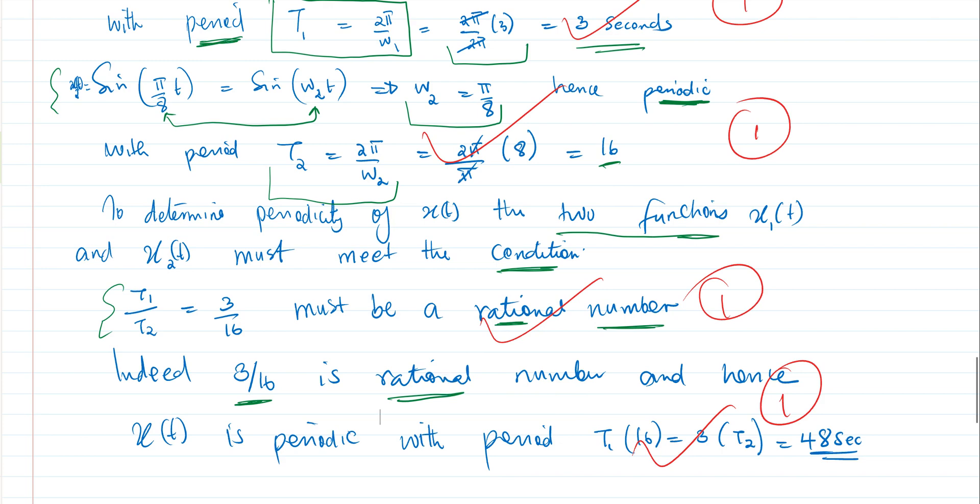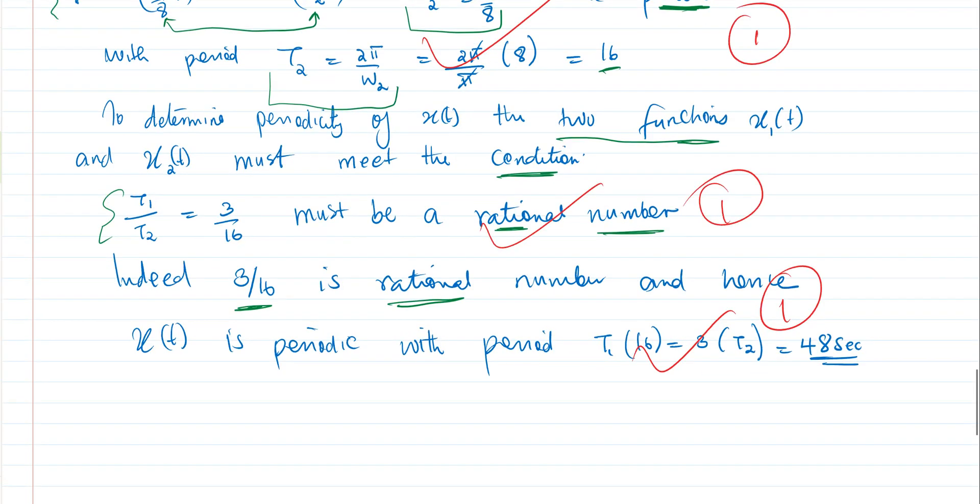So having said that, we say that our function is periodic. If one number was giving us a value that cannot be expressed as a function of two whole numbers, then our function would have been said to be not periodic. But since it is a rational number, then our function x(t) is periodic.